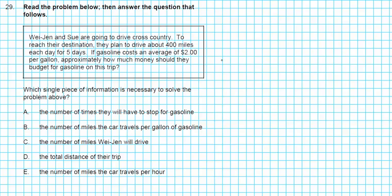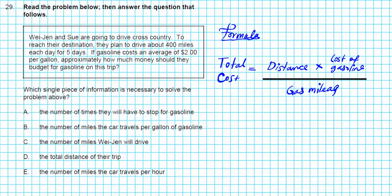The formula you're going to use is as follows. Total cost is basically the distance that you're traveling multiplied by the cost of gasoline, and that entire expression divided by your fuel consumption. Your fuel consumption is also referred as your gas mileage. So how much gas does your car consume? This is basically how you calculate the total cost for gasoline when you're going on a trip.